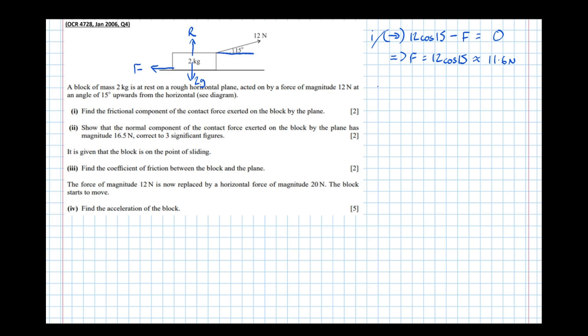So now let's consider up to be the positive direction. We've got R plus 12 Newtons which is this force that's pulling the block. However this time we want the upward component, the opposite component, which is sine—12 sine 15. Take the weight which is pointing down equals mass times acceleration which is zero because the acceleration is zero. Which means that R equals 2g take 12 sine 15.